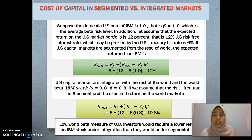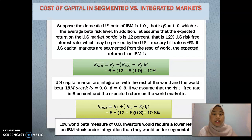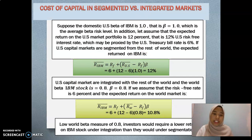Now I will show some examples about the cost of capital in segmented versus integrated markets. For the segmented market, it is domestic — US segmented in the country only. For the first example, they use a beta of 1.0, which is the average beta risk level. They assume the US market portfolio return is 12%, the US risk-free treasury bill rate is 6%, and US capital markets are segmented from the rest of the world. So the expected return on IBM is 12%, giving a cost of capital for the segmented market of 12%.